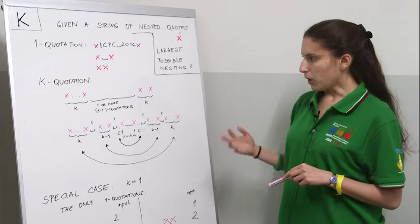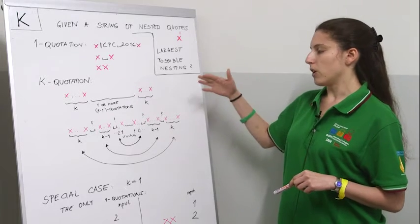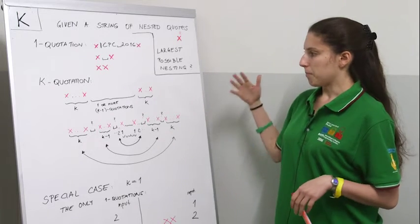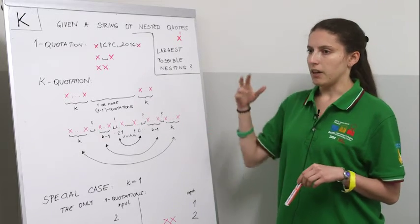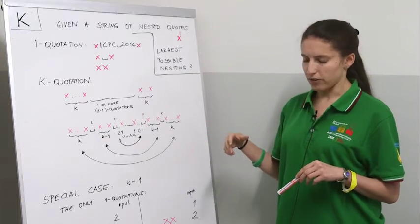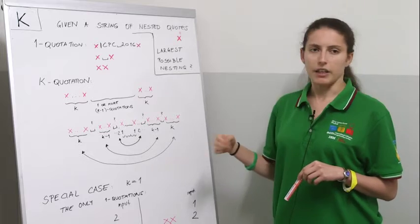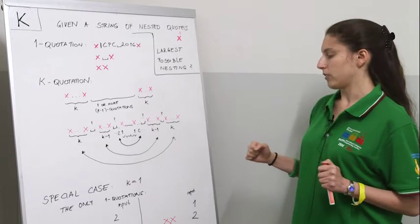Then what we basically do is that we go from the biggest quotations. In this particular case, it's from 100, and we are going to check the string whether it's the k-quotation. The checking will look as follows.